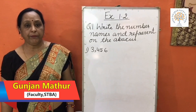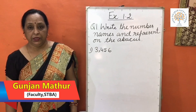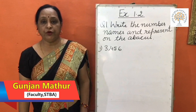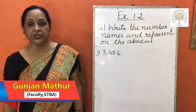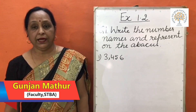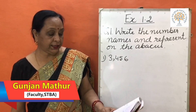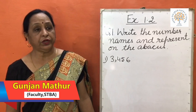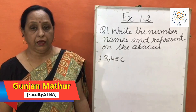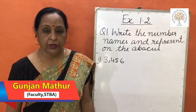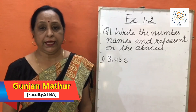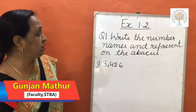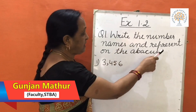Good morning everyone, welcome back to online classes of STP. In our previous class, we discussed numbers of 2 digits, 3 digits, and 4 digits. As we know, the smallest 4-digit number is 1000 and the largest 4-digit number is 9999. We also discussed how to show 4-digit numbers on the abacus and on the place value table. Today we are going to start Exercise 1.2, where the first question is to write the number names and represent them on the abacus.